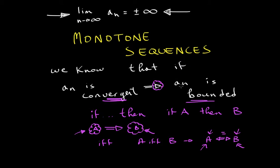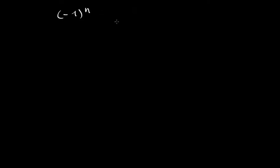However, the reverse is not true. If a sequence is bounded, it doesn't have to be convergent. We have talked about this specific sequence before — consider (-1)^n. What does this look like on a graph?